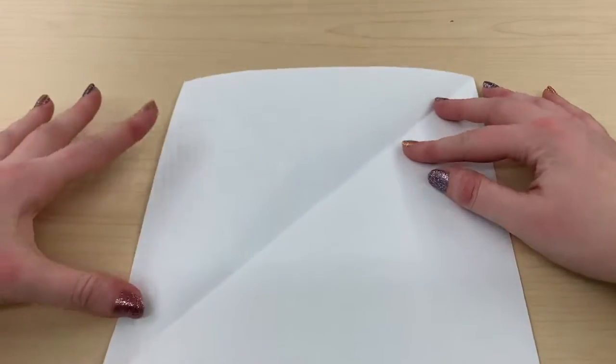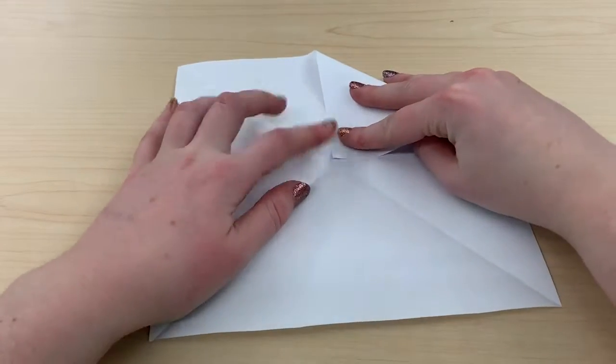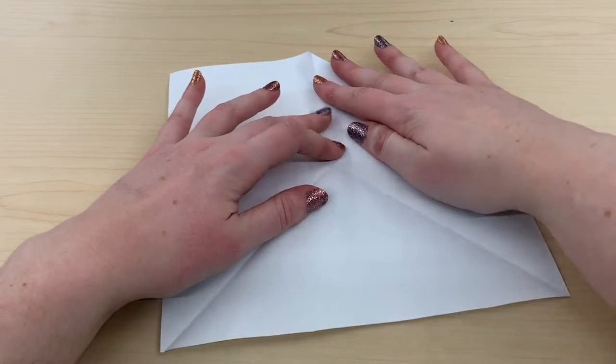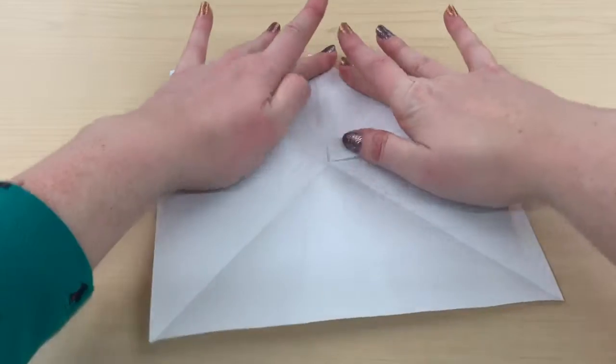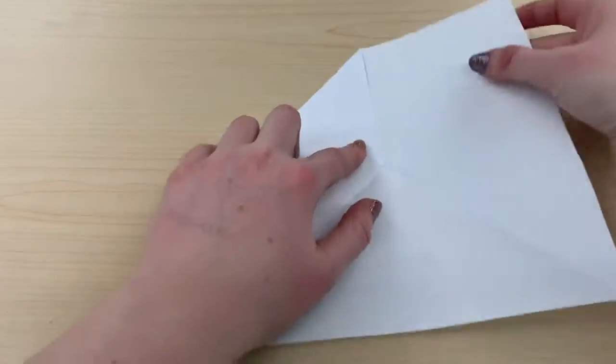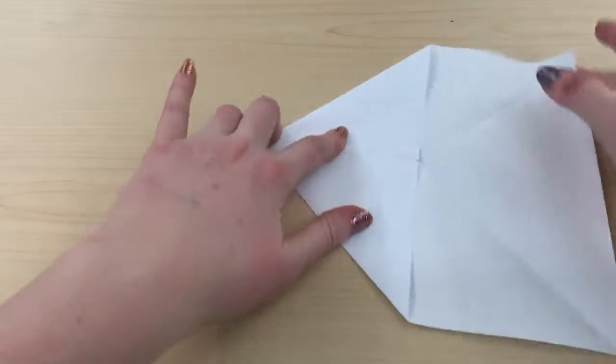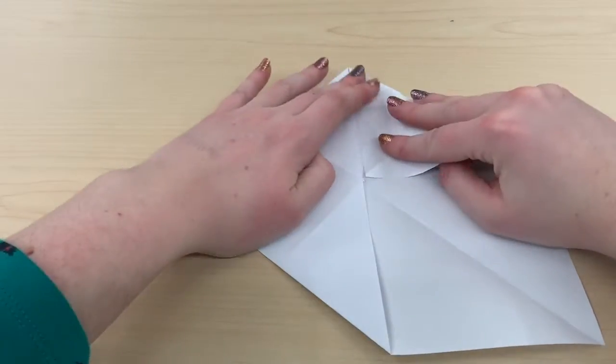So once you have a nice X formed by creases, you're going to fold each of the four corners into the center so that they meet the point where the two lines meet, that center of the X. And once you have that corner in, you're going to fold the edge flat. You're going to do this with every single corner and then you'll have another square.